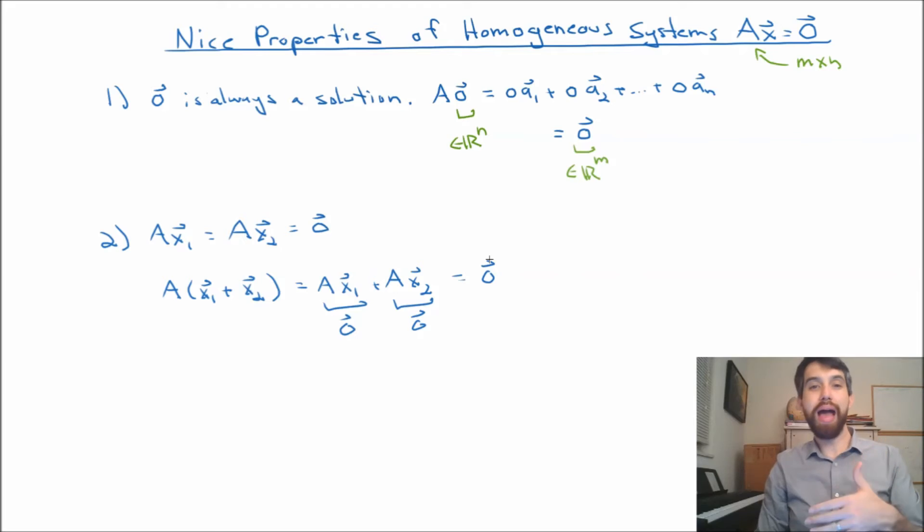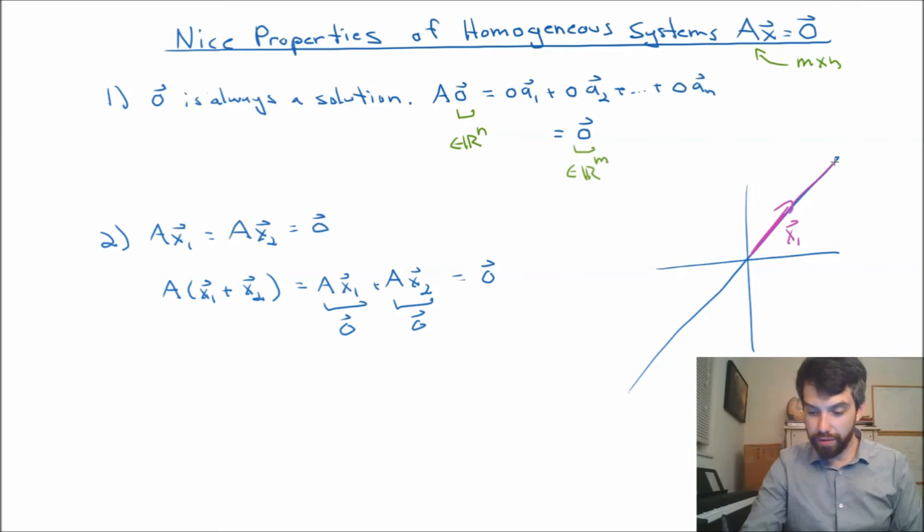Now, broadly, if we go back to the geometric view of it, where the solution to a homogeneous system is just some equation that's going to be going through the origin, then what we're effectively saying is that if I have this vector, like say x1, and some other vector over here, like an x2, then the sum of those two vectors, which is going to live way over here somewhere, that's my x1 + x2, we're saying that's also a solution.